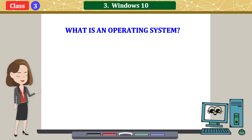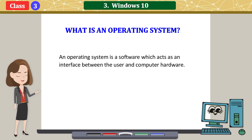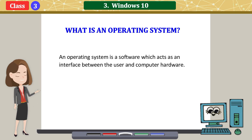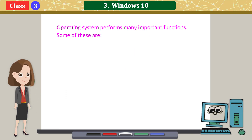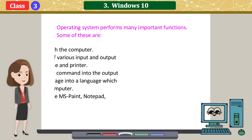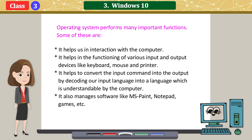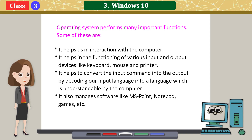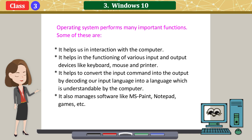What is an operating system? An operating system is a software which acts as an interface between the user and computer hardware. Operating system performs many important functions. Some of these are: it helps us in interaction with the computer, and it helps in the functioning of various input and output devices like keyboard, mouse, and printer.